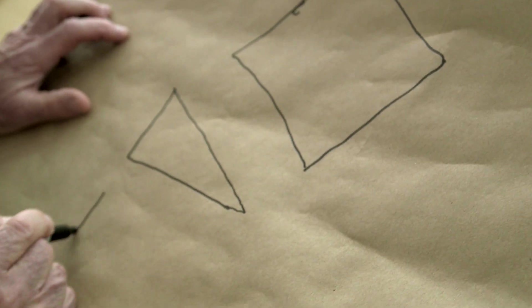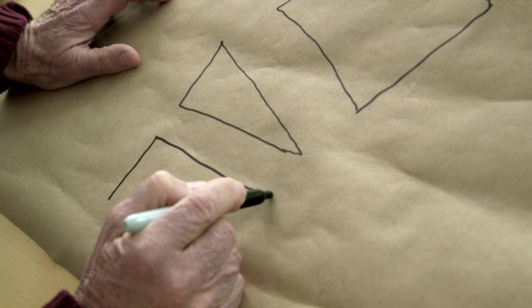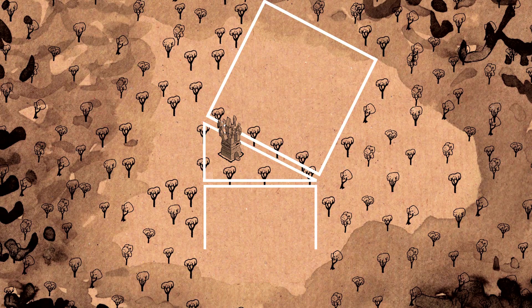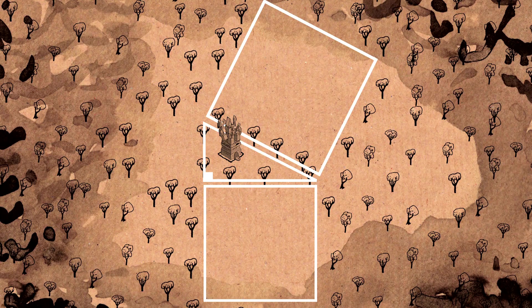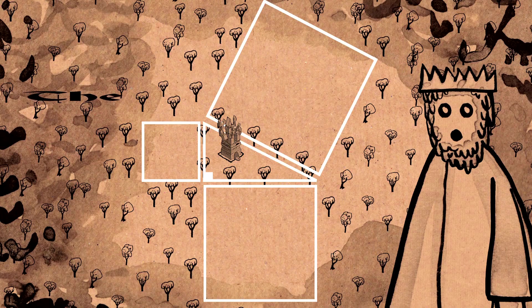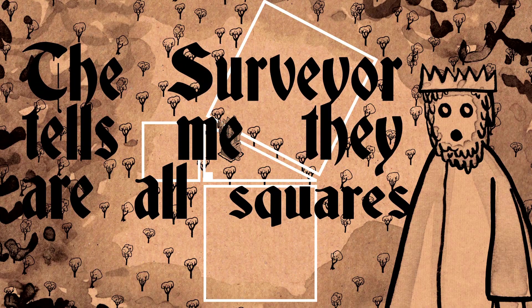And I have another whose edge is the side of this side of the triangle and a third the side of this side of the triangle. The surveyor tells me they're all squares.